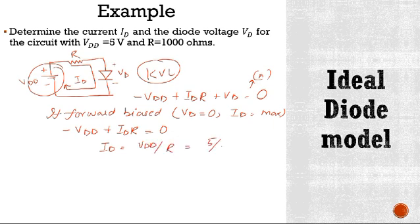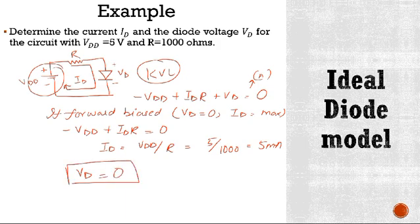Id is equal to 5 divided by 1000, equal to 5 mA. Now what will be the value of diode voltage Vd? We know that in case of an ideal diode, the value of diode voltage is 0. So this is how you are going to analyze any circuit using an ideal diode model.